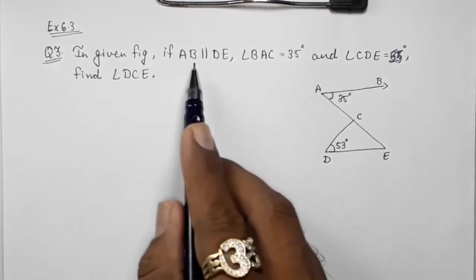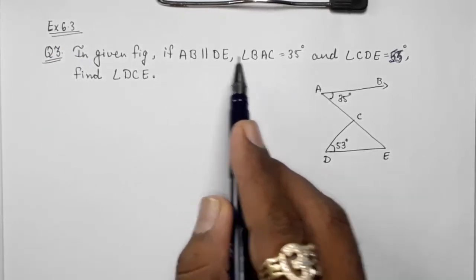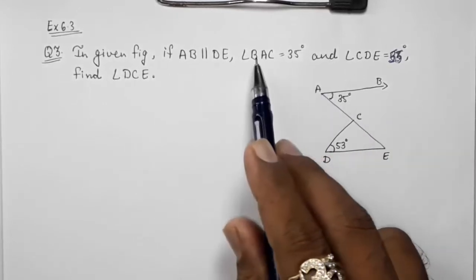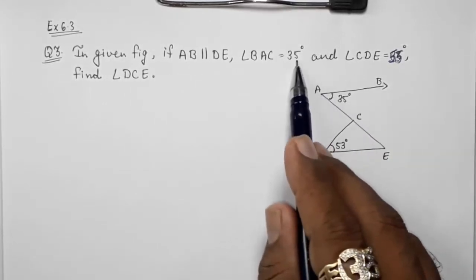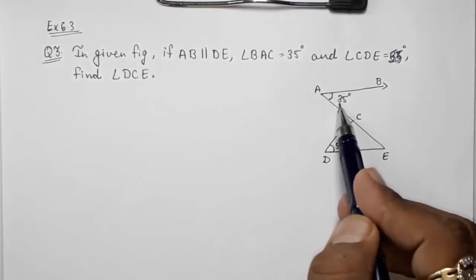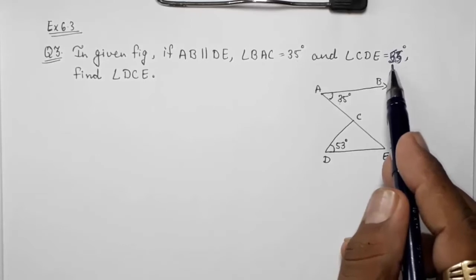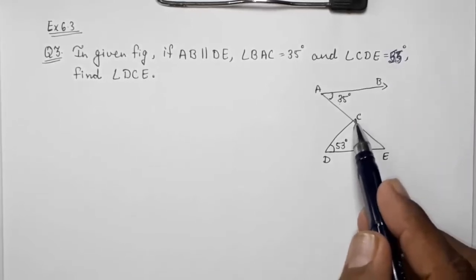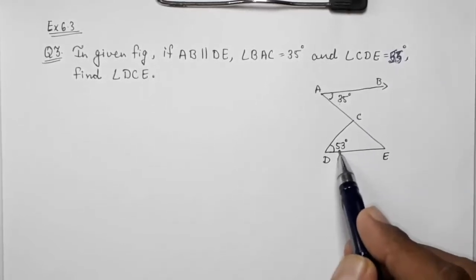In the given figure, if AB is parallel to DE, angle BAC is equal to 35 degrees, and angle CDE is 53 degrees.